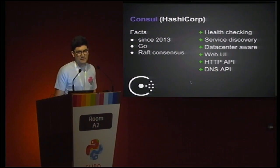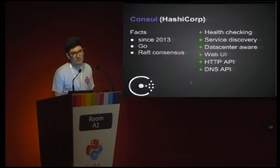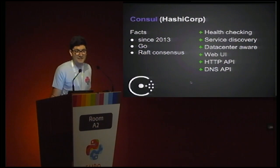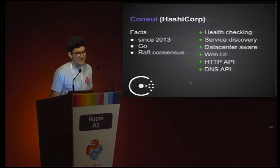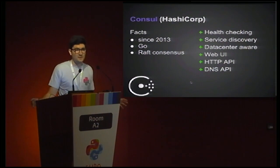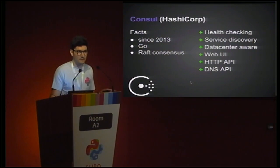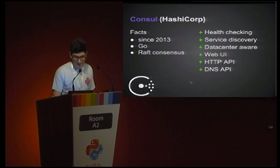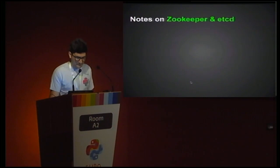The third technology is Consul, from HashiCorp — the newest of the three. It's also written in Go and uses the Raft consensus algorithm. It's an opinionated talk, so I didn't find any bad things to say about it: it has built-in service discovery, it's data center-aware so you can have multiple Consul clusters across data centers and they can communicate, and it also provides a DNS API so you can look up services using DNS.